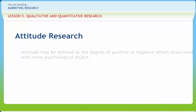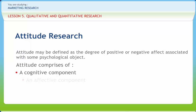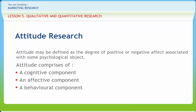Attitude may be defined as the degree of positive or negative effect associated with some psychological object. Attitude comprises three components. First, a cognitive component — a person's belief or information about the object. Second, an affective component — a person's feeling about the object, such as like or dislike, good or bad. Third, a behavioral component — a person's readiness to respond behaviorally to the object.